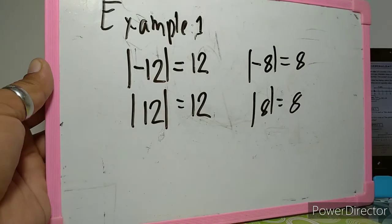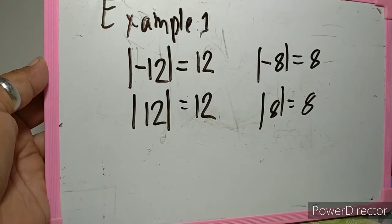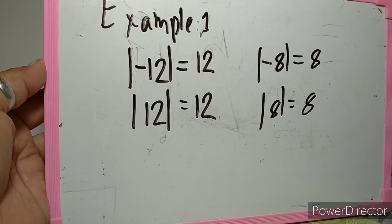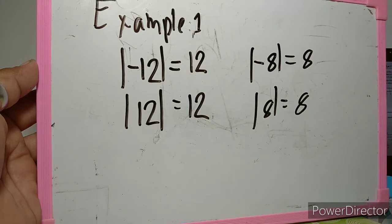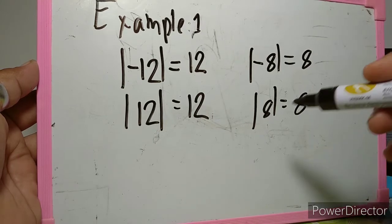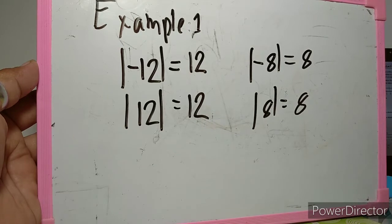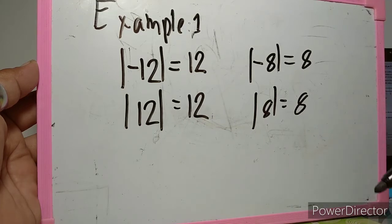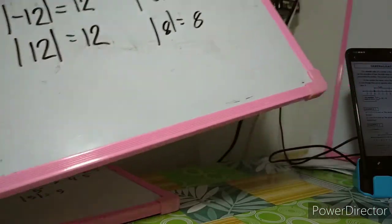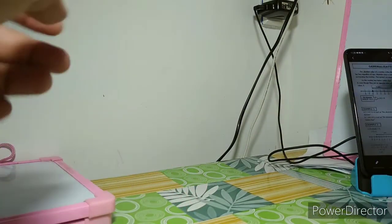So this is how to get the absolute value of a number. Always take note: all absolute values of negative numbers are positive because you are getting the distance from zero to the given point. Whether your direction is going to the right or to the left, the distance — the absolute value — is always positive.